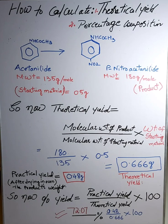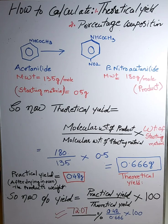In the end you get precipitates that are pale yellow in color. Wash with cold water to remove all the ortho product, which was formed in very low quantity. Then finally dry it in the oven at about 100 degrees centigrade and follow the recrystallization process. When we recorded the melting point of our product, it was almost 214 degrees centigrade, which is the expected value.